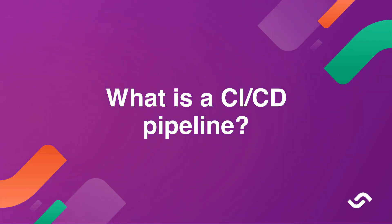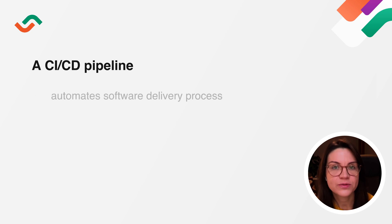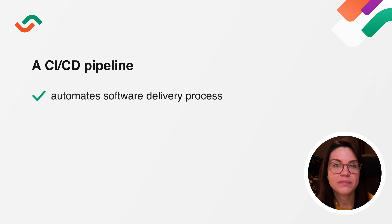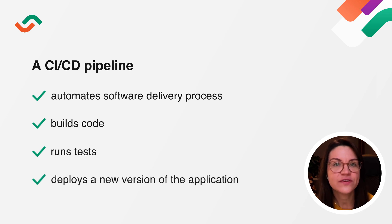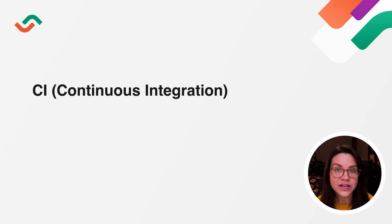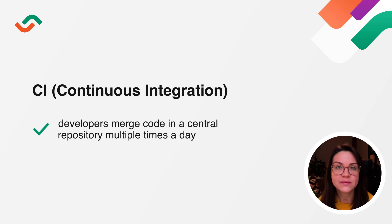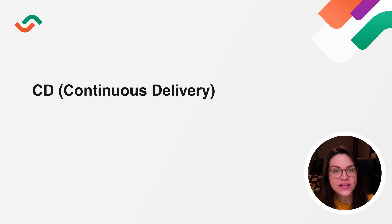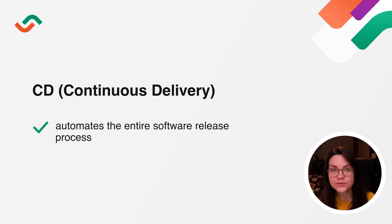So first of all, what is a CI/CD pipeline exactly? A CI/CD pipeline automates your software delivery process — the pipeline builds code, runs tests, and safely deploys a new version of the application. CI, short for Continuous Integration, is a software development practice in which all developers merge code in a central repository multiple times a day. CD stands for Continuous Delivery, which, on top of Continuous Integration, adds the practice of automating the entire software release process.